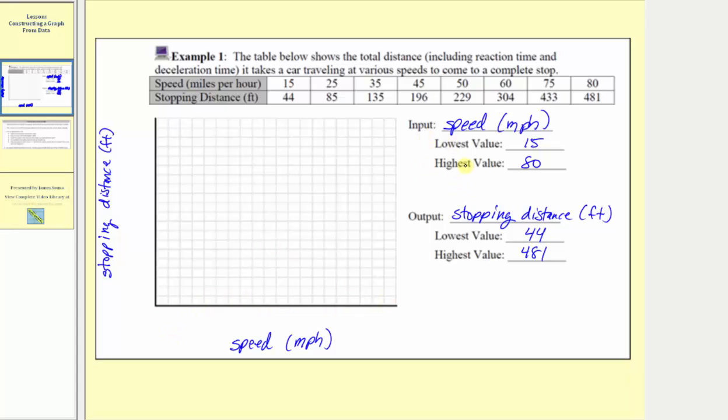For example, for the inputs, instead of going from 15 to 80, let's go from 0 to 100. So we'll have 0 over here on the far left and 100 over here on the far right. Now we need to determine how we want to scale this axis and how many tick marks we want from 0 to 100.